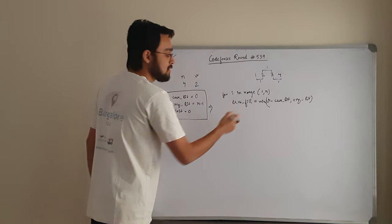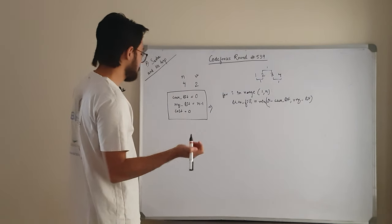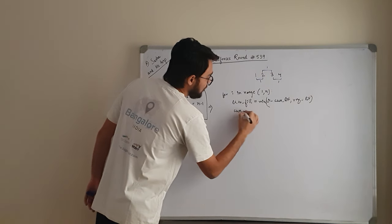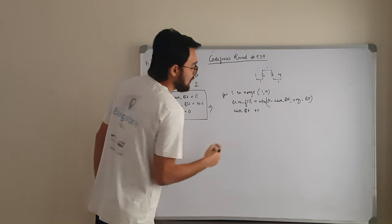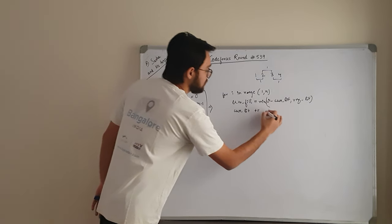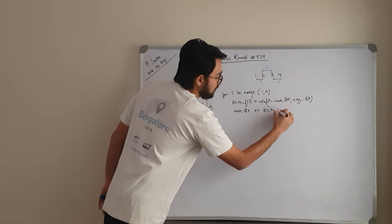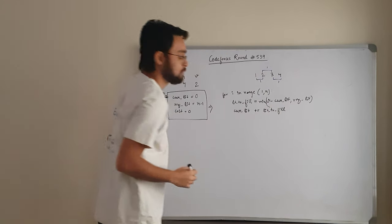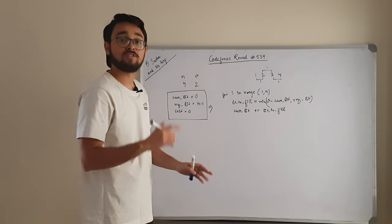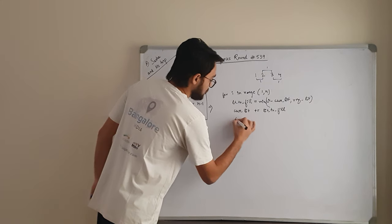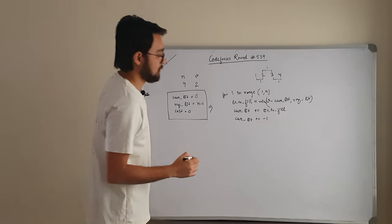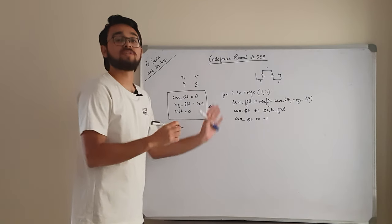After filling liters_to_fill, current_liters increases by liters_to_fill. Then, moving from city i to the next city consumes 1 liter, so current_liters decreases by 1.